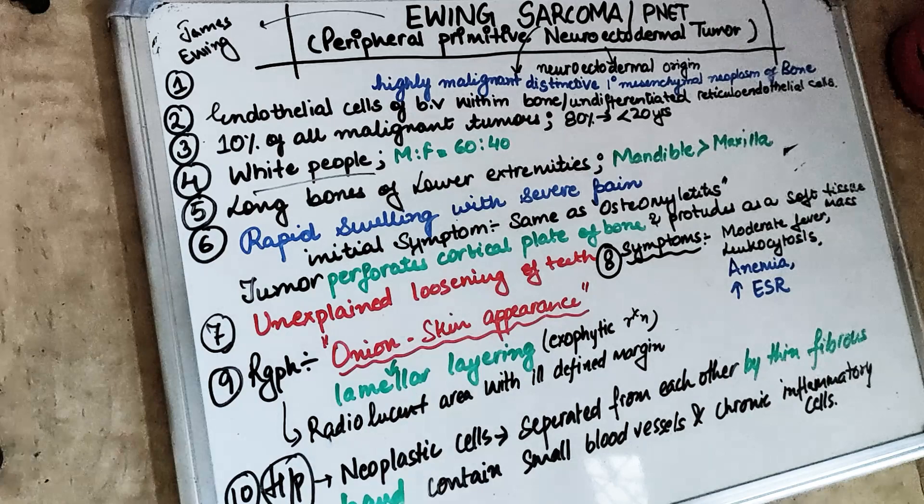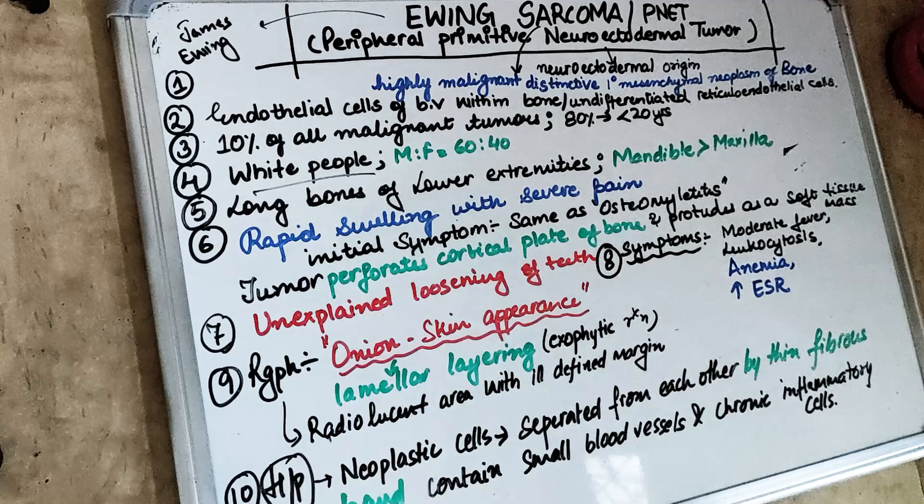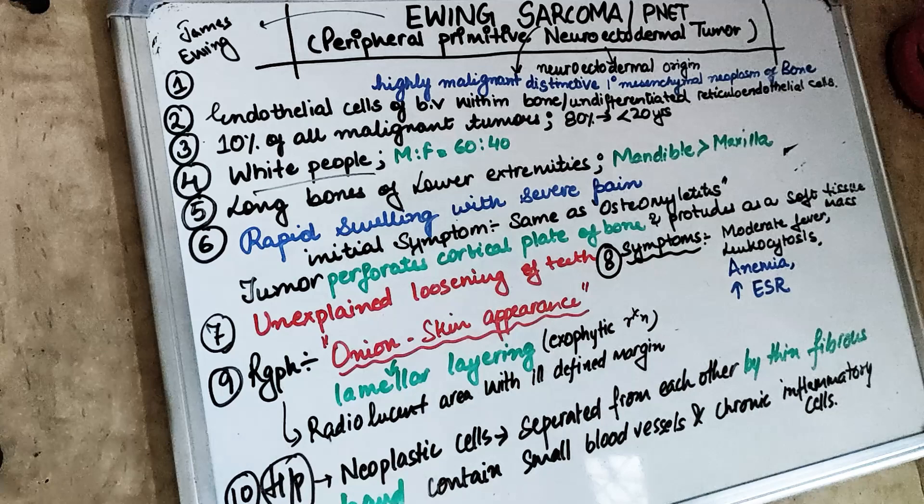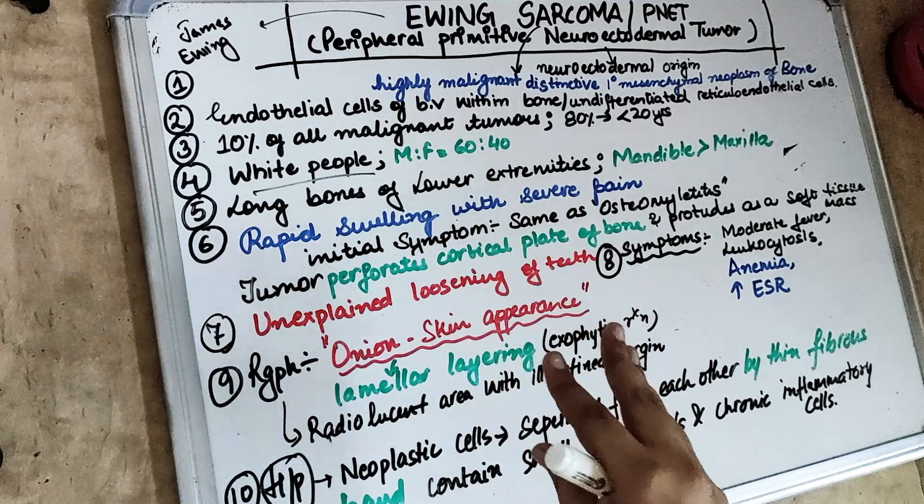In Ewing Sarcoma, there is rapid swelling with severe pain. This is notable because pain is rarely seen in other tumours. While most other tumours are slow-growing, Ewing Sarcoma presents with rapid swelling and severe pain.